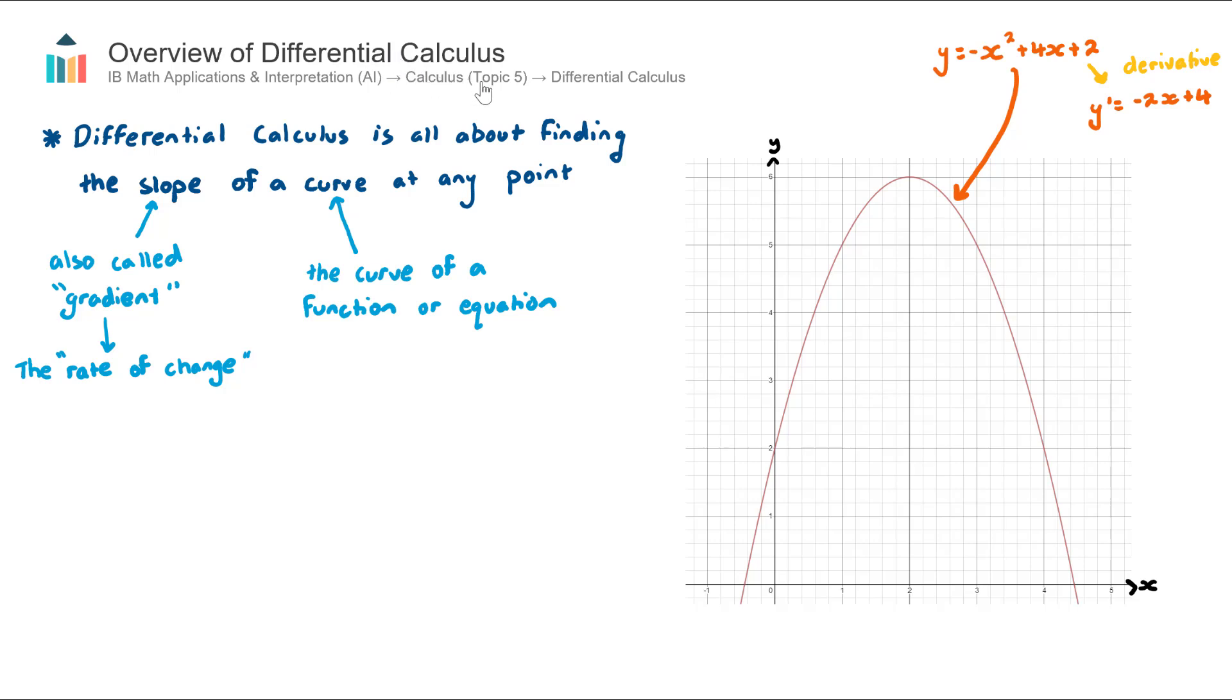Now we are currently in topic five calculus in the AI course and in topic five there are two main subtopics, two main areas. The first area is this subtopic, differential calculus and then we also have integral calculus as well.